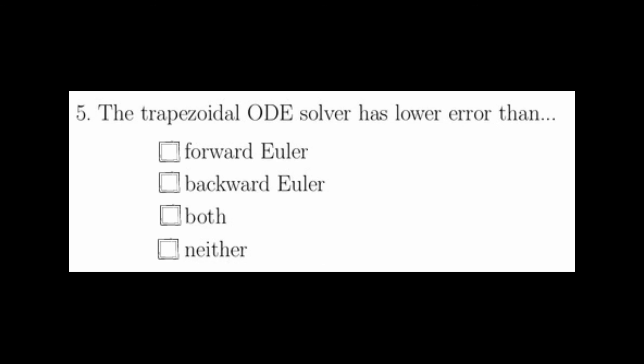Observational error is just something you're going to see on your glasses, not something being fed back into the system. For question five, the trapezoidal ODE solver has lower error than both forward and backward Euler. The trapezoidal method has local truncation error on the order of h cubed, versus forward and backward Euler, which both have error on the order of h squared.